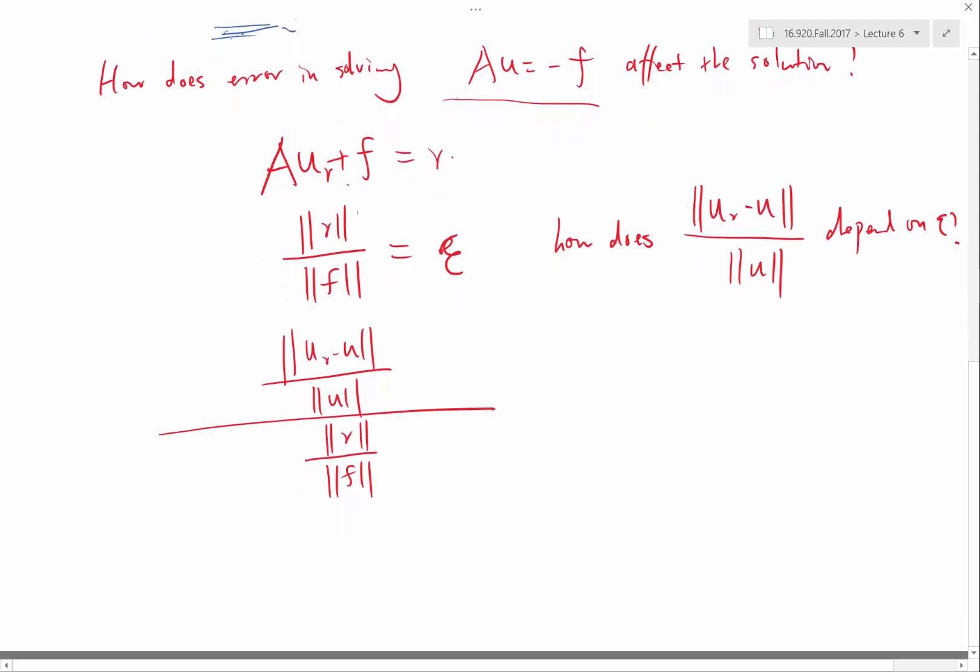So then let's do this analysis by linking how does r relate to ur minus u. So we'll perform this analysis like this. So first of all, let's flip the whole denominator up there, so what we get is ur minus u magnitude divided by u magnitude times f magnitude divided by r magnitude.